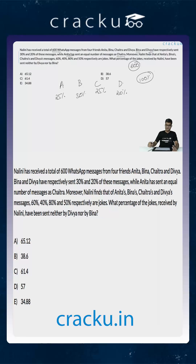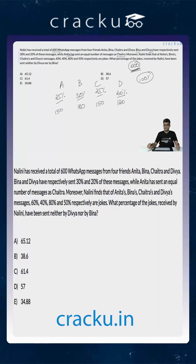In terms of the actual number of messages sent: Anita sent 25% of 600, which is 150. Bina sent 30% of 600, which is 180. Chaitra sent 25% of 600, which is 150. And Divya sent 20% of 600, which is 120. These are the number of WhatsApp messages that were sent.